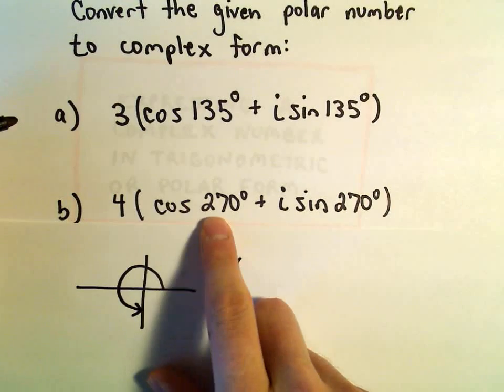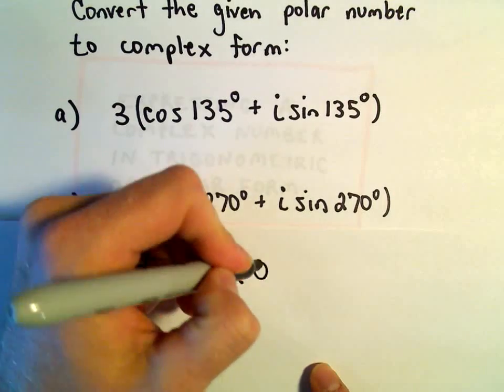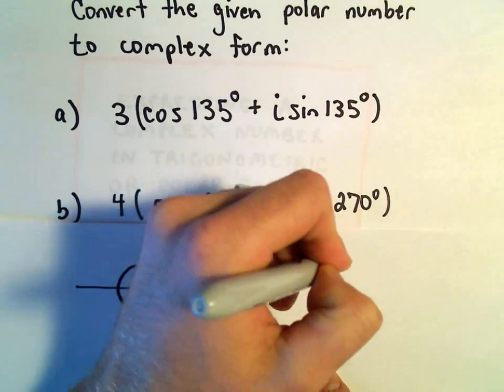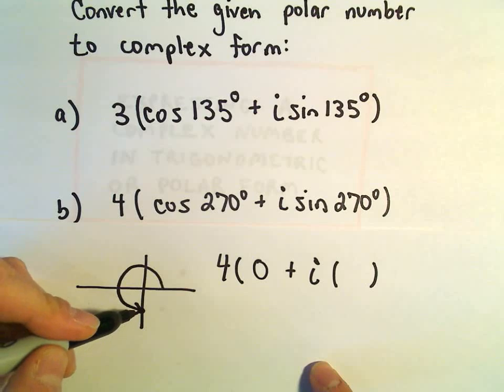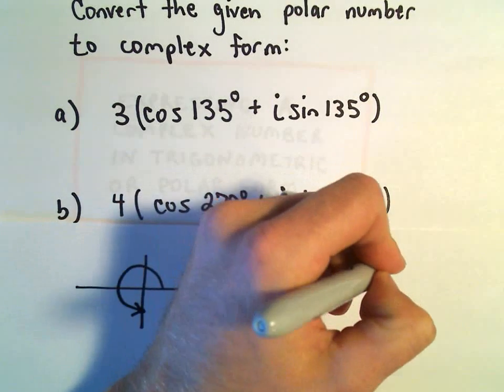And, well, cosine of 270 degrees, the x-coordinate on the unit circle there would be 0. Sine of 270 degrees, that would be the value of the y-coordinate on the unit circle, which would just be negative 1.